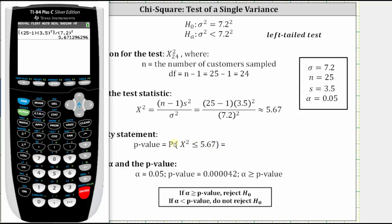Now we will determine the p-value using the TI-84 and the chi-square CDF function. To do this, we press second VARS for the distribution menu, option 8. Now we enter the lower bound, comma, the upper bound, comma, the degrees of freedom. Because we have a left-tailed test, the lower bound is zero, comma, the upper bound is 5.67, comma, the degrees of freedom are 24, close parenthesis, and enter.